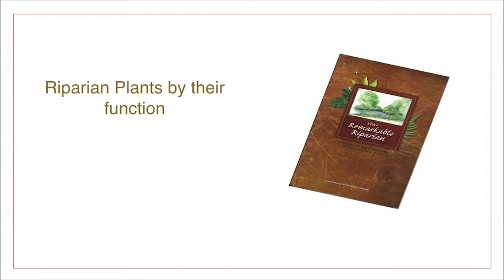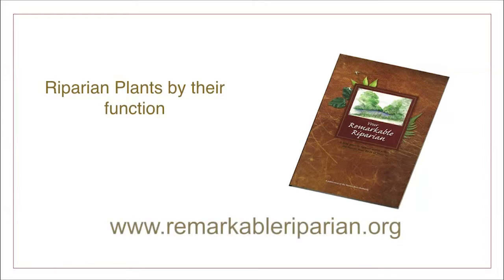The Remarkable Riparian Plant Field Guide was created to illuminate the importance and diversity of riparian plants and to develop a common understanding of their function. The booklet is a beautiful, photographic, and informational guide to riparian plants that are common to most of Texas. The Field Guide can be found in digital format at www.remarkableriparian.org.